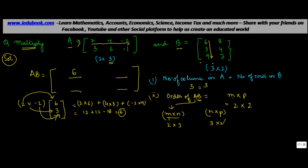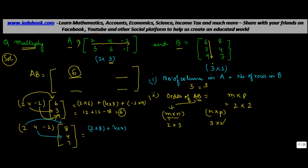For the first row, second column element, you multiply the first row of A by the second column of B. So: 2×8 plus 4×4 plus (−2)×7 = 16 + 16 − 14 = 18. This goes into the first row, second column of AB.